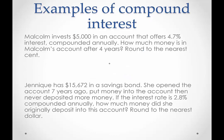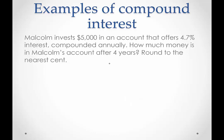Let's look at some examples. Here are two examples. I encourage you to pause the video, try them for yourself, and see if we agree with our answers. Keep in mind the information that's given to you in these two examples. Okay, first let's talk about Malcolm. Malcolm invests $5,000. That indicates to us that we have a present value of $5,000 in an account that offers 4.7% interest compounded annually. So we have an interest rate of 4.7%. Very important that we convert this to its equivalent decimal by dividing by 100 or moving the decimal two places to the left, giving us 0.047. How much money is in Malcolm's account after four years? So we have a time of four years. Round to the nearest cent.